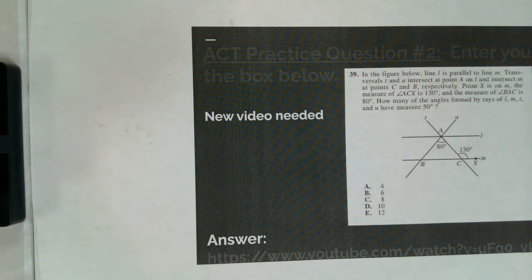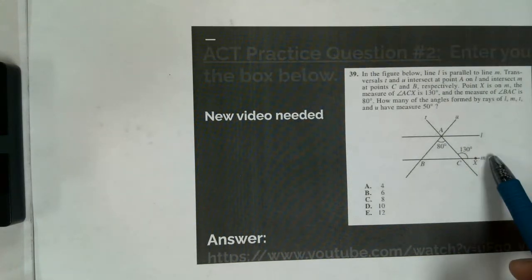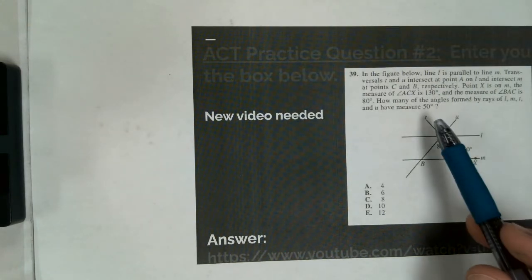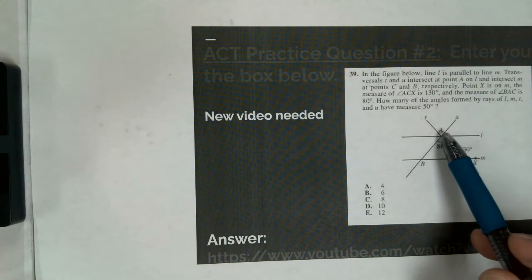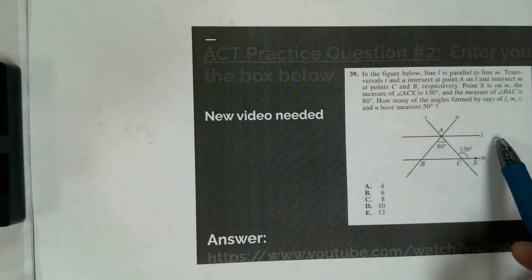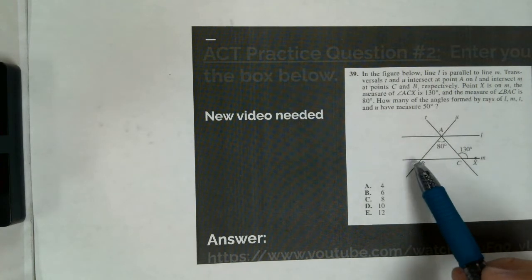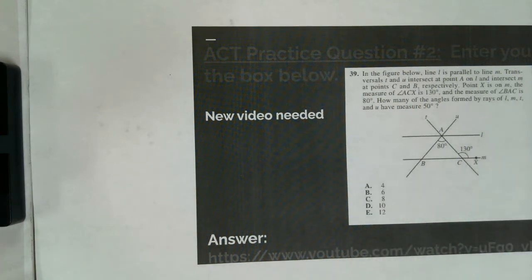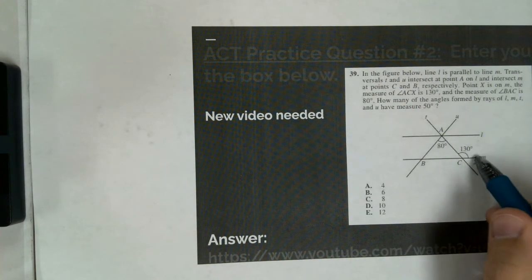Alright, so let's look at the answer to number 2. In the figure below, line L is parallel to line M. Transversals T and U intersect at point A on line L, and at points C and B on line M, respectively.